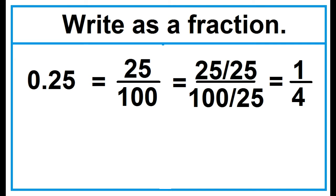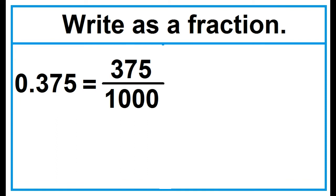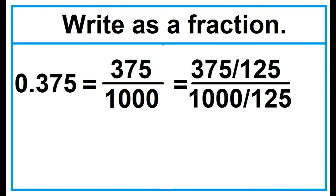Another example: write as a fraction, 0.375. 0.375 is read as 375 thousandths. Write 375 as the numerator and 1000 as the denominator. The common factor is 125. Divide 375 by 125 and 1000 by 125. 375 divided by 125 is 3, and 1000 divided by 125 is 8. So 0.375 is equal to 3 over 8.